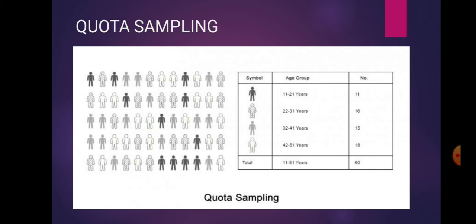So quota sampling is where clear bifurcation is done on the basis of age, gender, income, family, etc. Best example is if we have age classification, we use quota sampling.